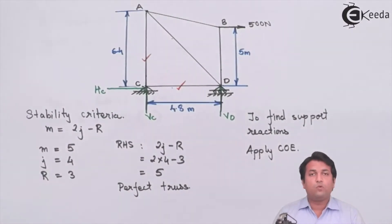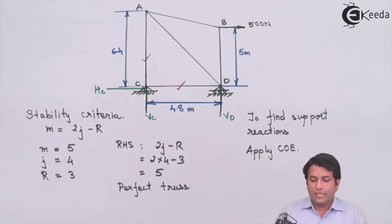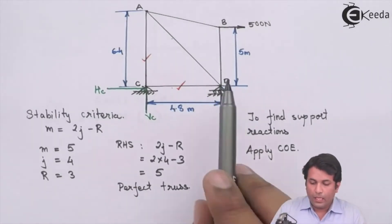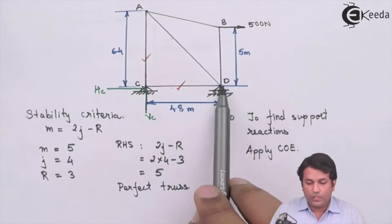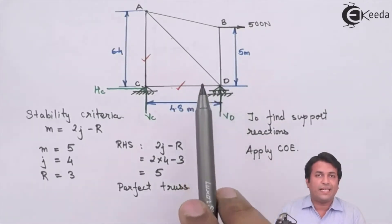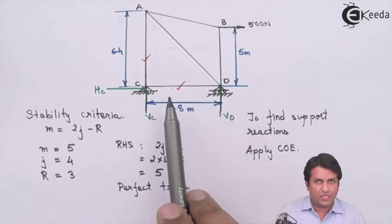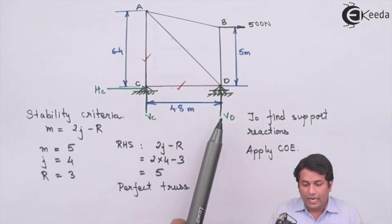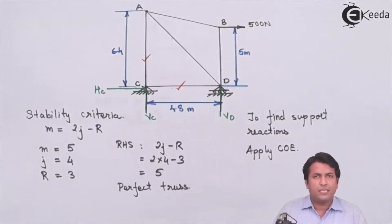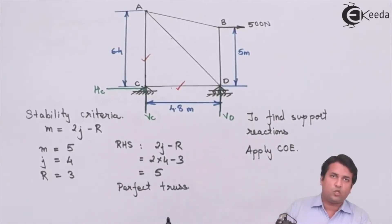Moving on to joint D: the force in member BD is unknown and the force in member AD is unknown, but the force in member CD is already known from the observation at joint C. I also know the vertical reaction at D. Since there are only two unknown forces at joint D, I can easily solve it.